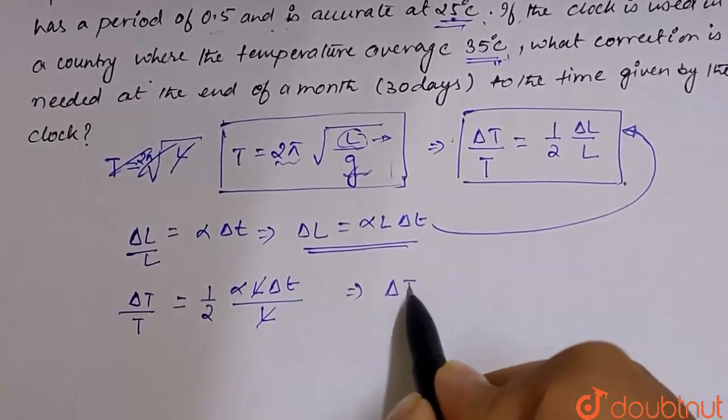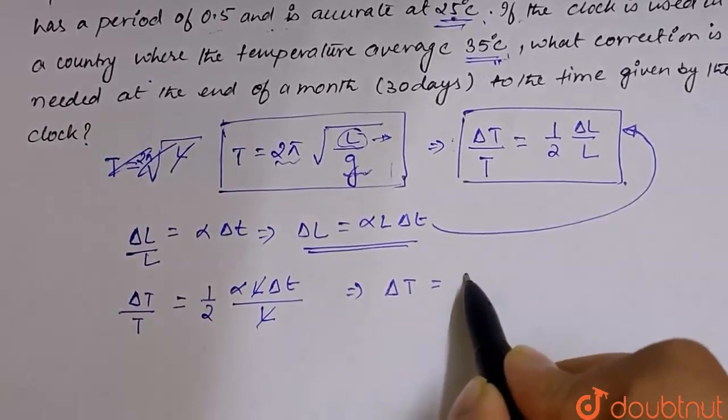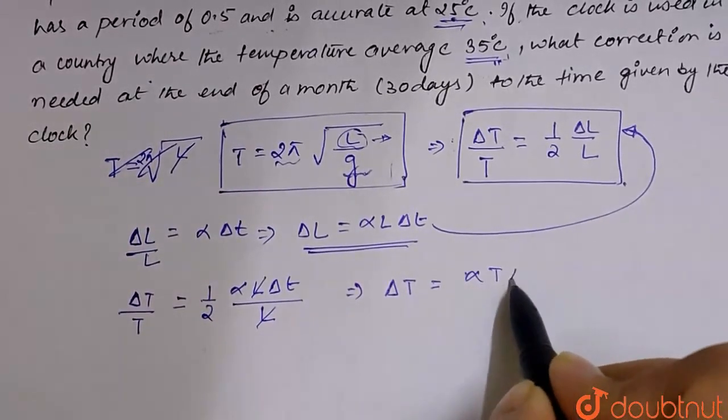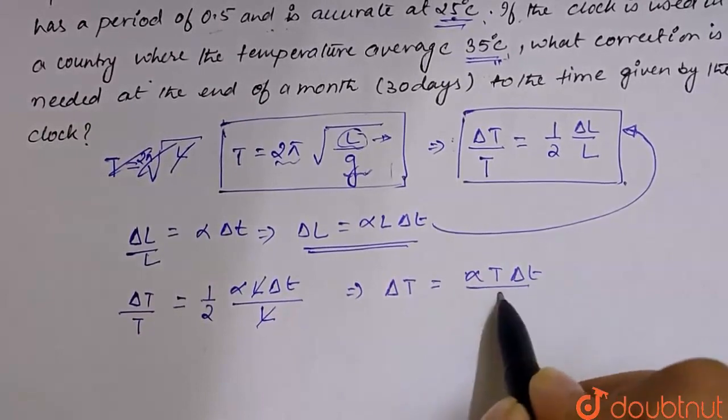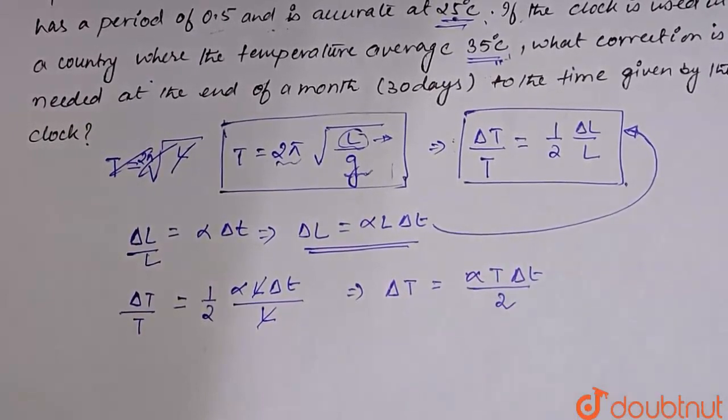Here is the change in time period which will be: alpha T delta T divided by 2.